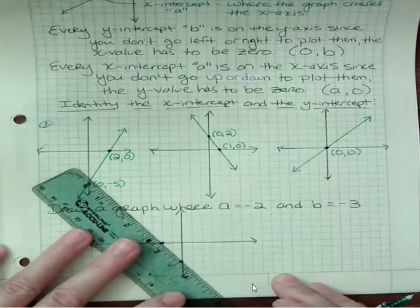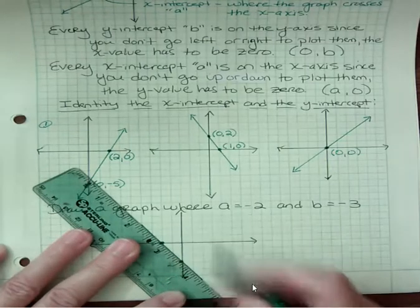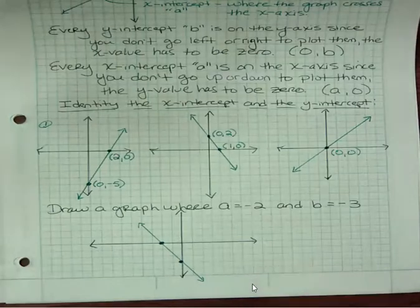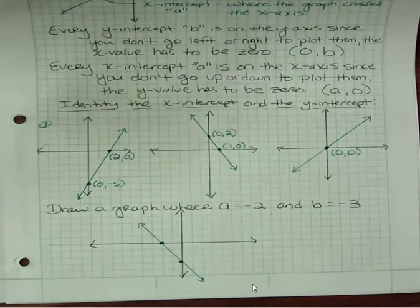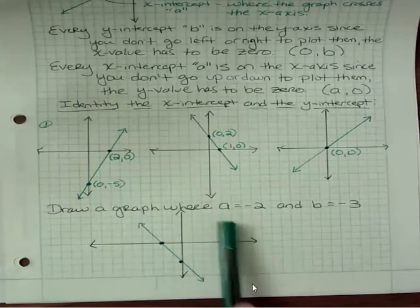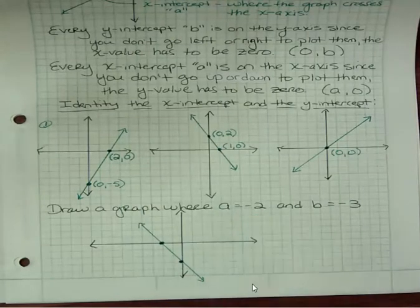And I could connect those up. And there's a graph where it has an x-intercept of negative two and a y-intercept of negative three. And the point of that was to remind you we were writing these as ordered pairs, but you can also say the x-intercept is negative two or the y-intercept is negative three in that format.